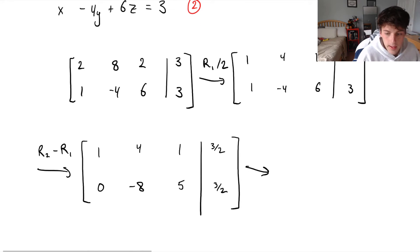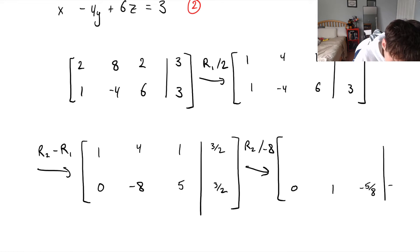Okay. Next. We now have our first column looking good. But we want the second column to have a leading entry where that negative 8 should be. So to turn that into a 1, we can divide row 2 by negative 8. And that will result in 0, 1, minus 5 eighths. And this will now be minus 3 over 16. And our first row becomes unchanged. 1, 4, 1, 3 over 2.